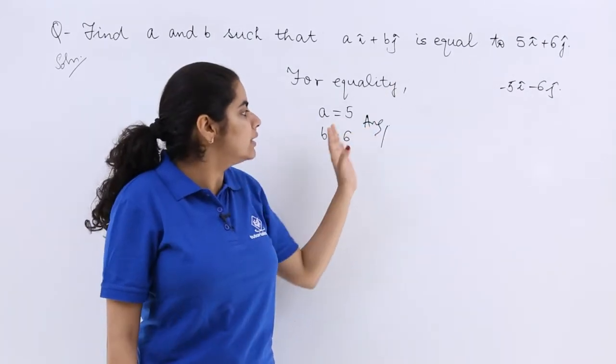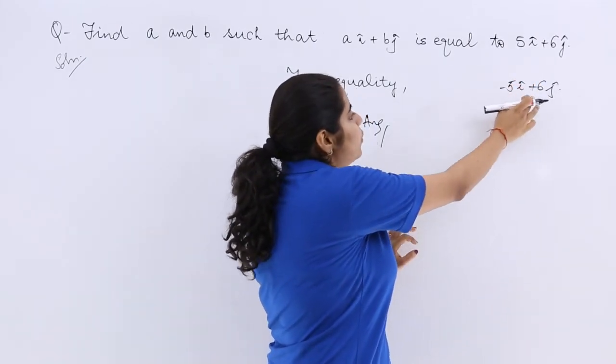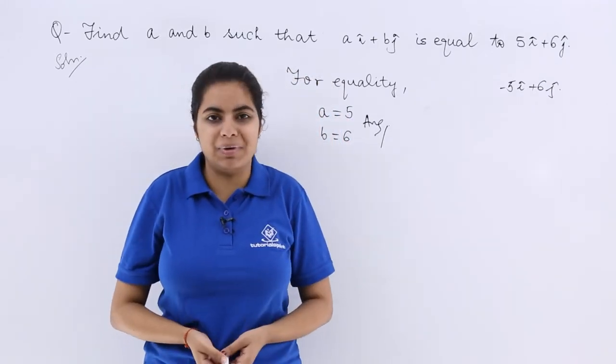Here nothing was there, that means plus, but in case one is plus, one is minus, then also A is equal to minus 5, B is equal to 6. So these types of questions can come in your one mark.